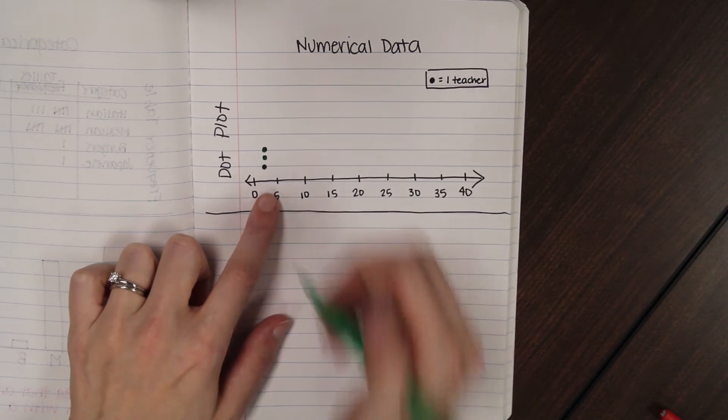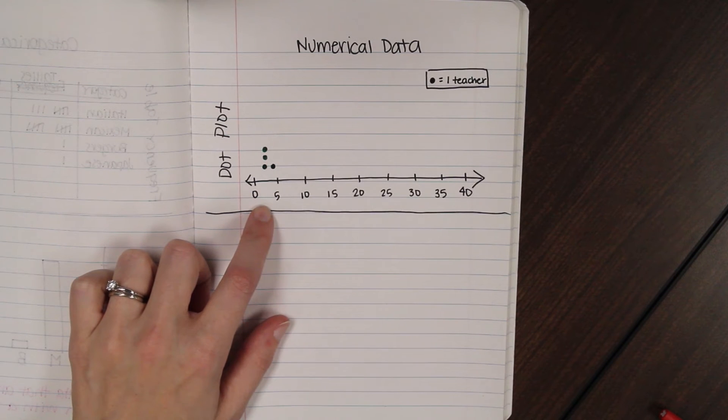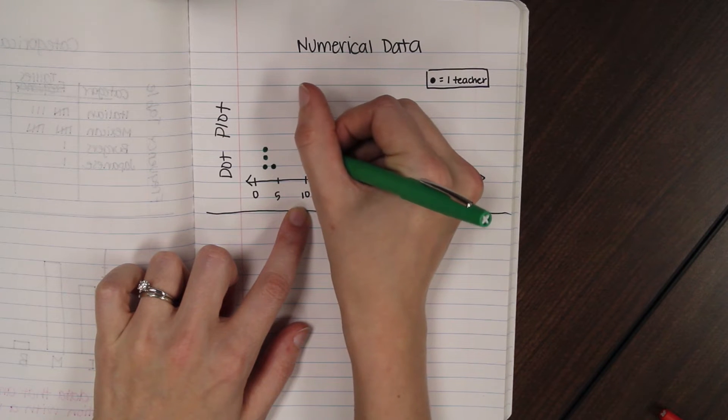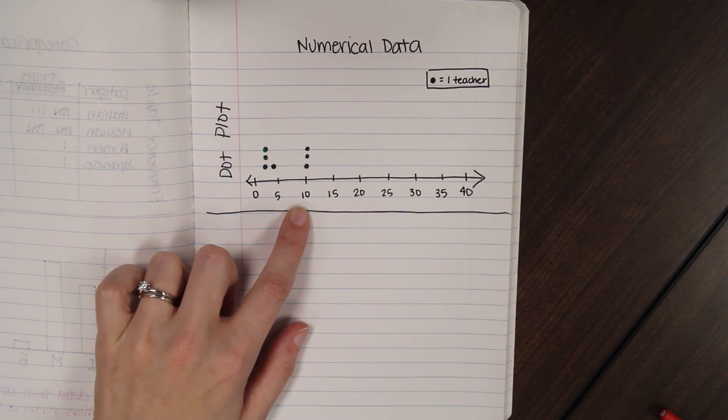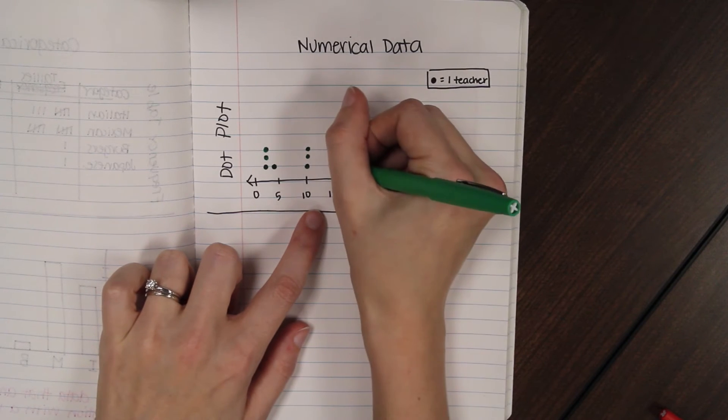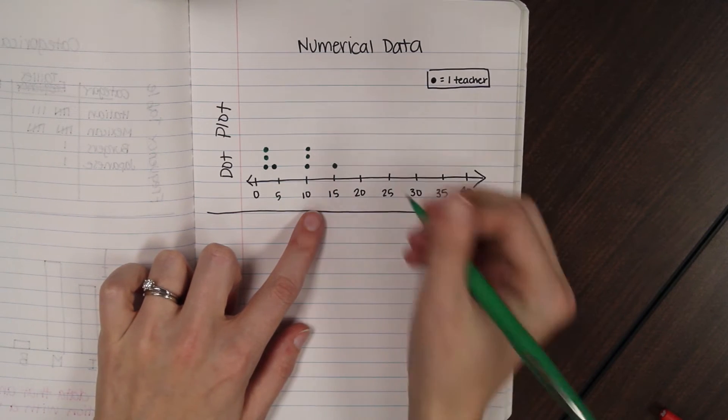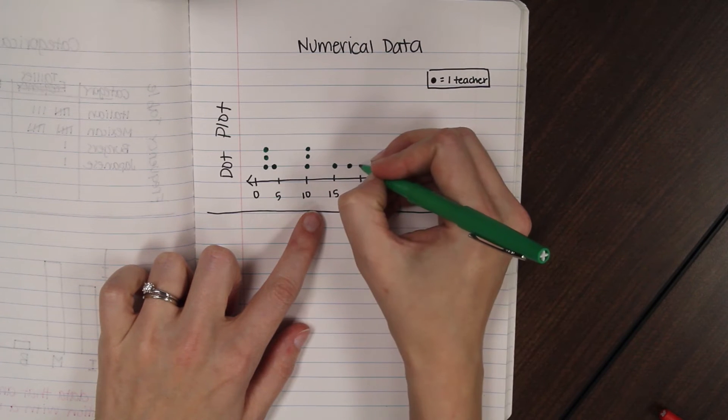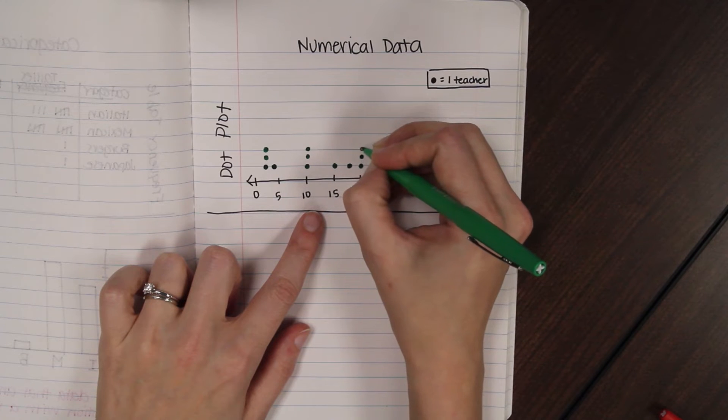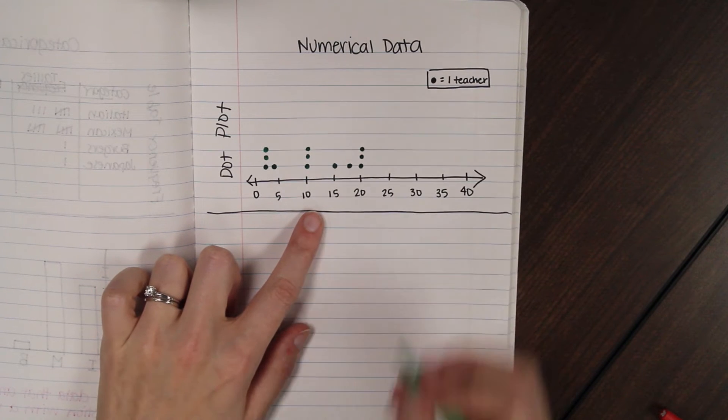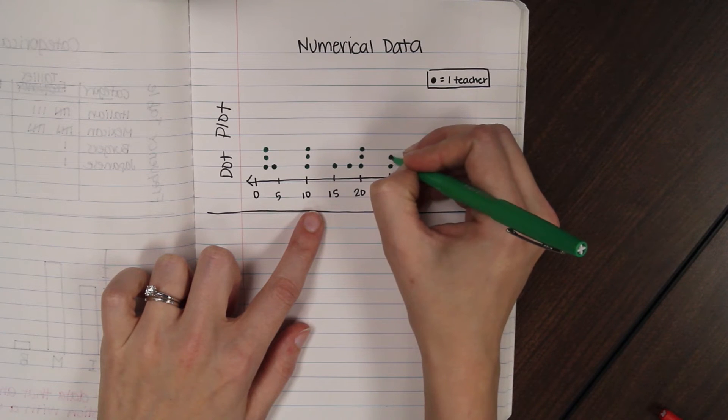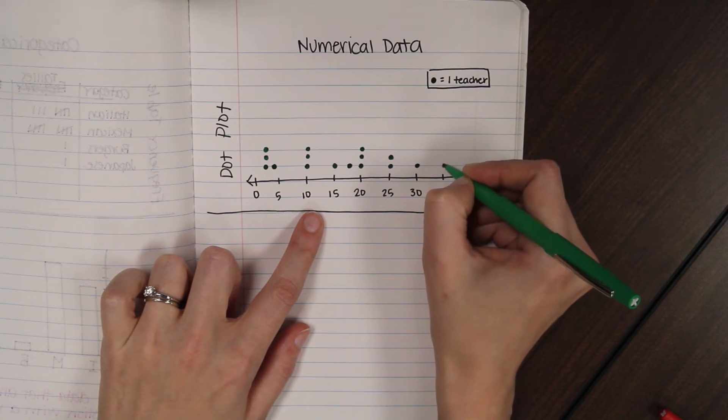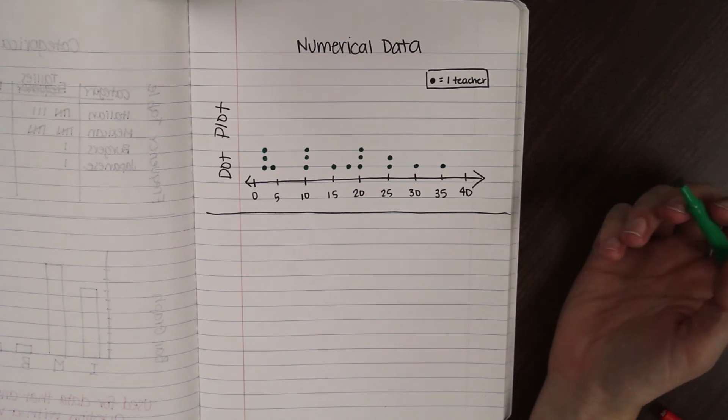We had one teacher say four. So, I'll put a dot at four. We had three teachers say that they went to about ten concerts. So, we'll put one, two, three dots. We had one teacher say they've been to about fifteen. Another one say about seventeen. Three teachers said twenty. Two said twenty-five. One said thirty. And one thirty-five. So, get your dots placed on there. Pause if you need to.